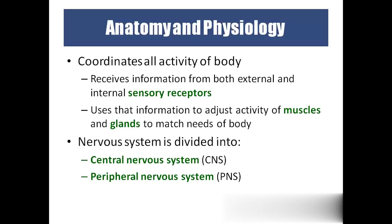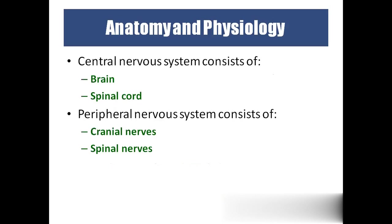Coming to anatomy and physiology: all body activities are coordinated by the brain and spinal cord. It receives information from both external receptors — for vision, smell, taste, touch, temperature, pressure, and pain — and internal receptors. That information goes to the brain for processing, and finally we react with the help of muscles and glands. The whole nervous system is divided into two parts: central nervous system, which includes the brain and spinal cord, and peripheral nervous system, which includes cranial nerves and spinal nerves.